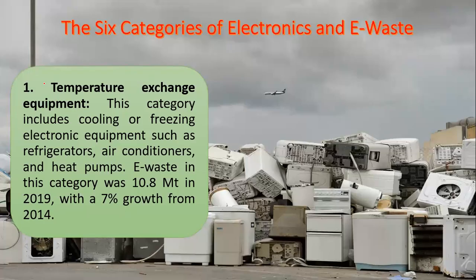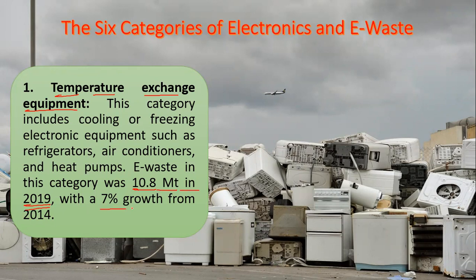The first category is temperature exchange equipment. This includes refrigerators, air conditioning systems, deep freezers, geysers, and all other equipment related to temperature exchange. When we look at the data, e-waste in this category was 10.8 metric tons in 2019, with a 7% growth from 2014, showing how effectively this category has been increasing globally.